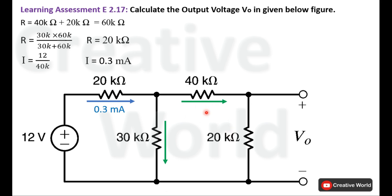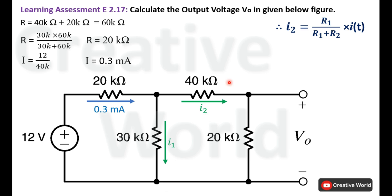Label the branch currents: I1 for one branch and I2 for the other. We need to calculate I2. Using the current divider rule: I2 = (R1 / (R1 + R2)) × total current, where total current is 0.3 milliampere.